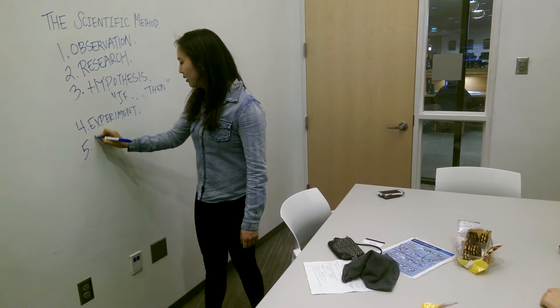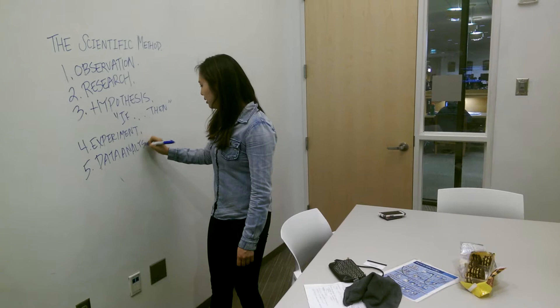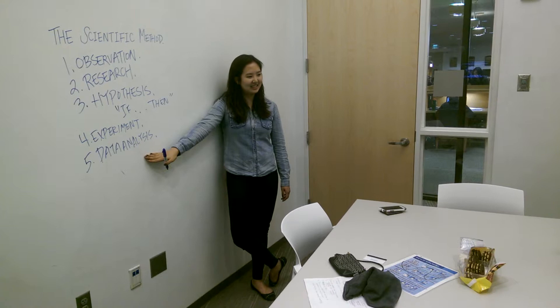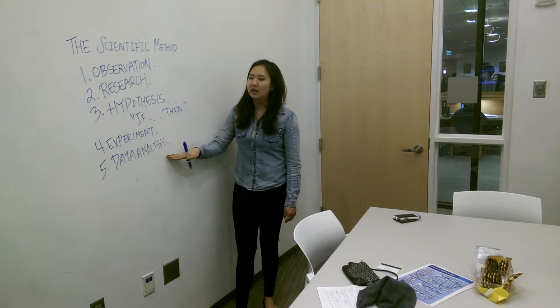And then the fifth step would be data analysis. What do you guys think this is? Generalizing the results of your experiment? Exactly. You're just taking whatever numbers and observations you made and thinking about how they apply to whatever other steps you took.